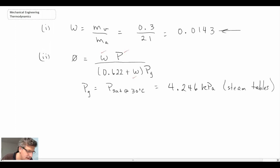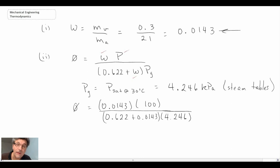That gives us the value of Pg. From that, we can then get the relative humidity. And notice I kept both pressures in kPa, and we get 52.88%.